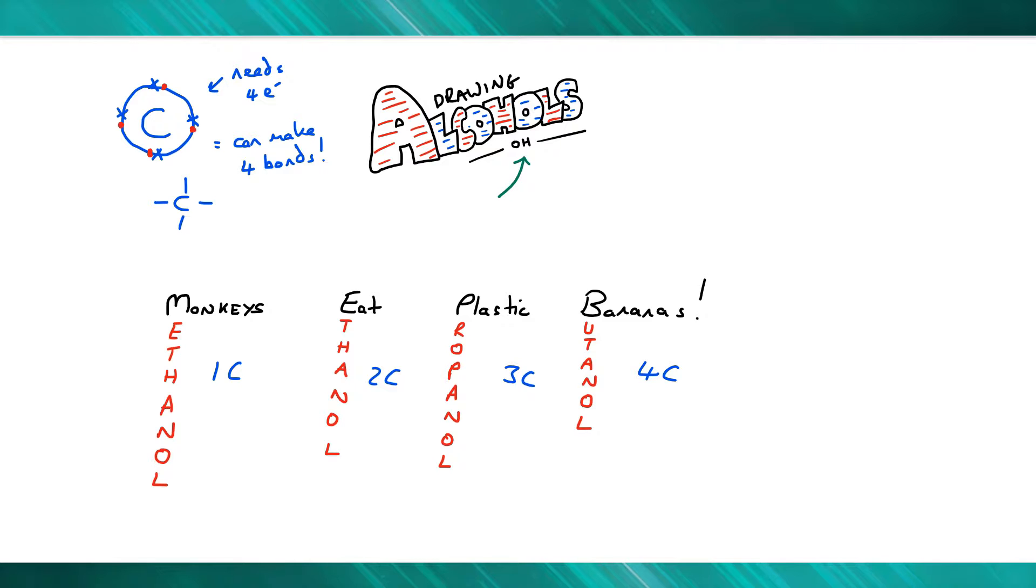The next step is to remember that all alcohols have an OH group. Now you can draw any of the alcohols we've talked about. If we start with methanol, we've got one carbon. That carbon atom can make four bonds, so we draw it out like this.